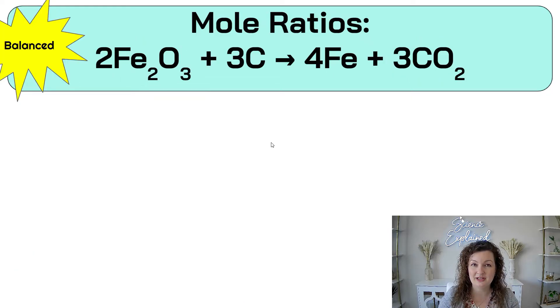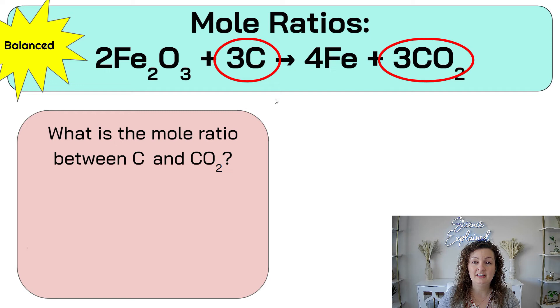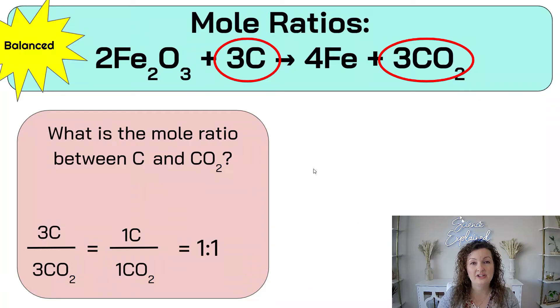Never forget to balance your equation first. So the question says, what is the mole ratio between Fe2O3, which I went ahead and circled, and CO2, which is over here? So the mole ratio, you're just looking at the coefficient in the front, the very big number that's in the front. So for Fe2O3, that is 2, and for CO2, that is 3. So this is a 2 to 3 ratio.